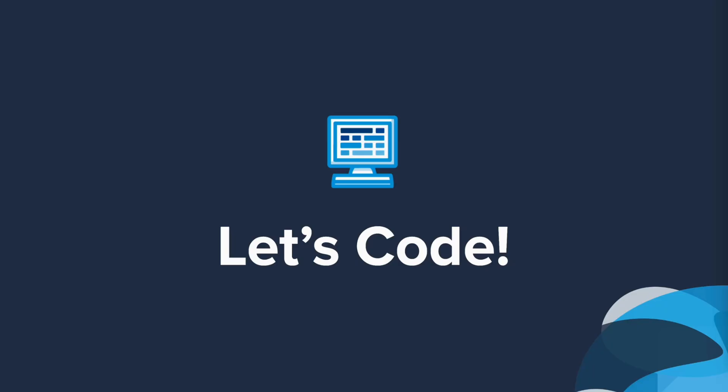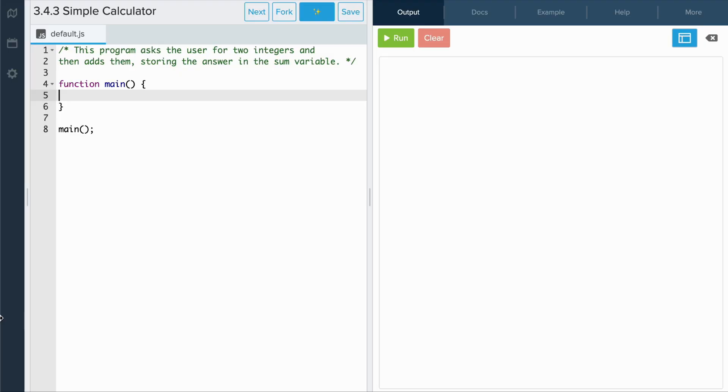Great, now let's explore some examples that use these operators and constants. Let's write an example program. Let's create a simple calculator that will ask a user to enter two integers and then calculate their sum. Let's start by getting input from the user and storing it into variables.